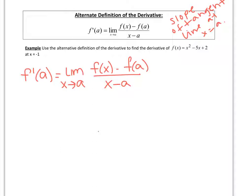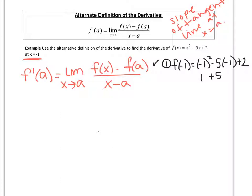I want to find the slope of the tangent line at x equals negative 1. The first thing I want to do is find f of a. Since the a value is negative 1, I need f of negative 1 — plug negative 1 into the function. We get 1 plus 5 plus 2, which is 8. So f of a, or f of negative 1, is 8.